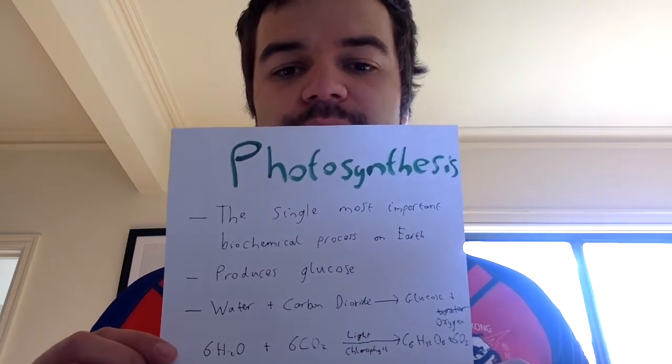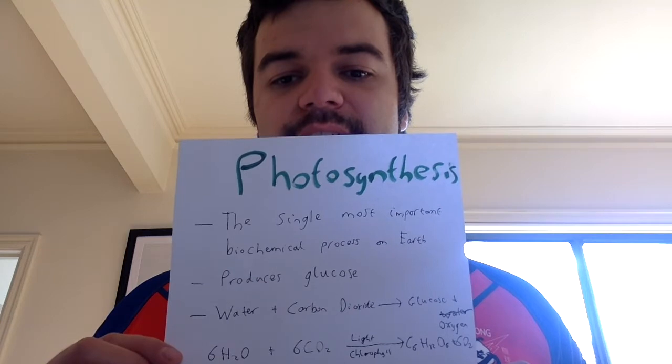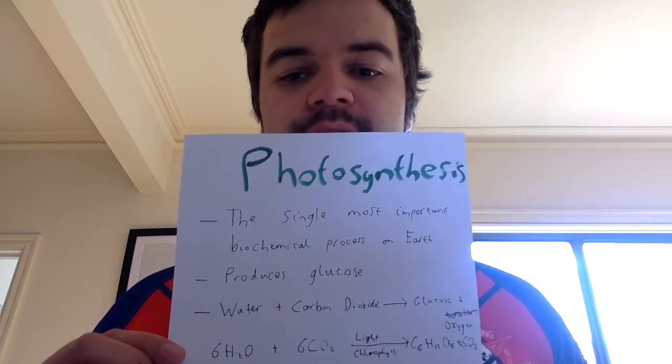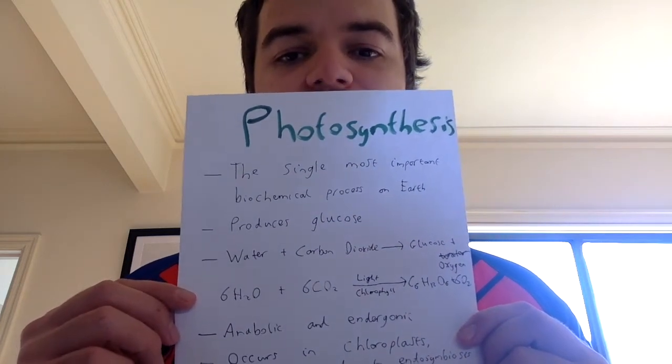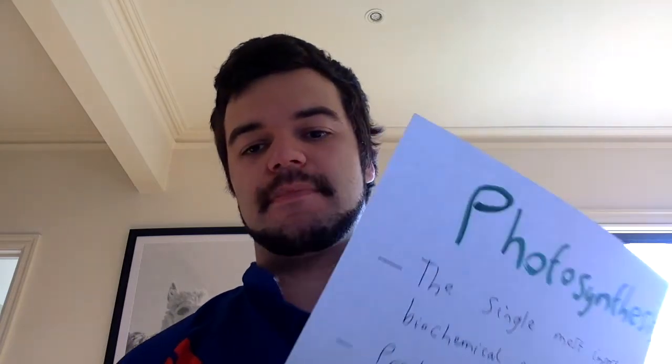The overall equation for photosynthesis is water and carbon dioxide, in the presence of light and chlorophyll, makes glucose and oxygen. We refer to that as an anabolic and endogonic process. Anabolic means building up a large molecule — glucose is C6H12O6, quite a large molecule — so an anabolic process means a large molecule is being built up, unlike respiration which is catabolic, where the large molecule is broken down. It's endogonic because it absorbs energy, and that energy ultimately comes from the sun.